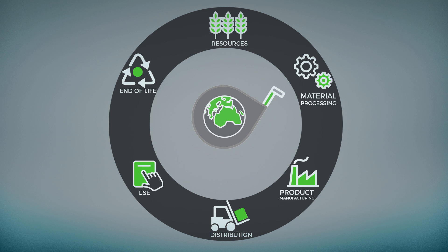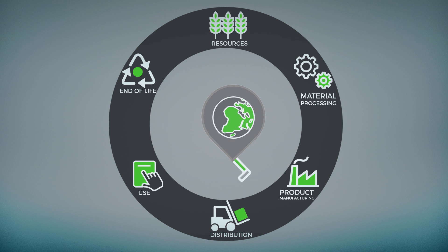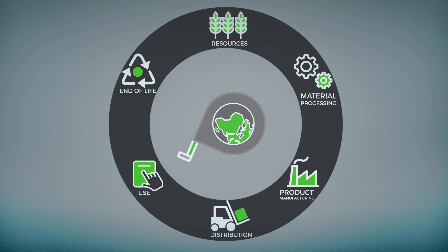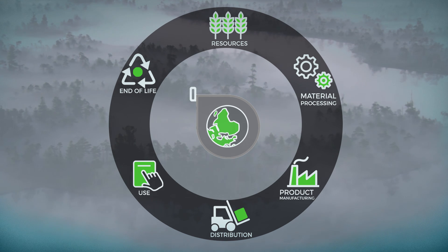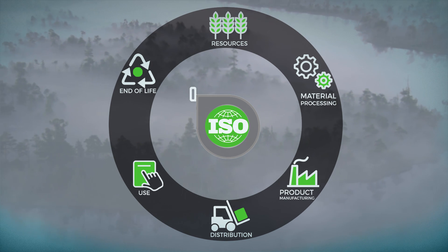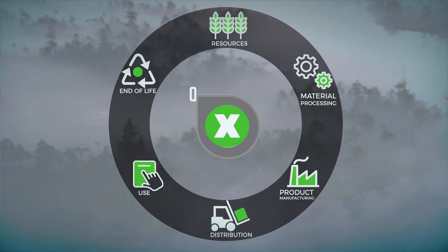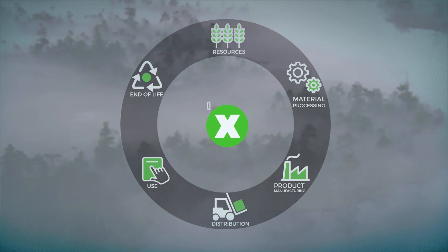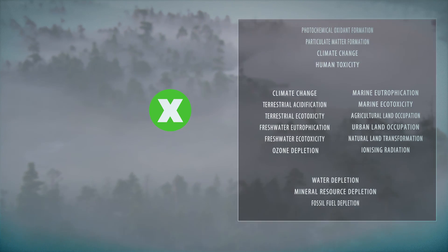The stages considered include resource use, material processing, product manufacturing, distribution, use of the product, and end-of-life operations. Life Cycle Assessment has been standardized by the International Organization for Standardization, and gives us the opportunity to measure how the life cycle of a product contributes to an extensive set of environmental indicators.